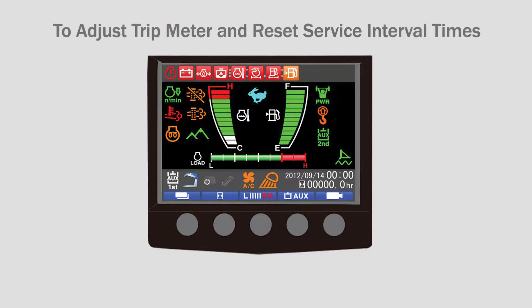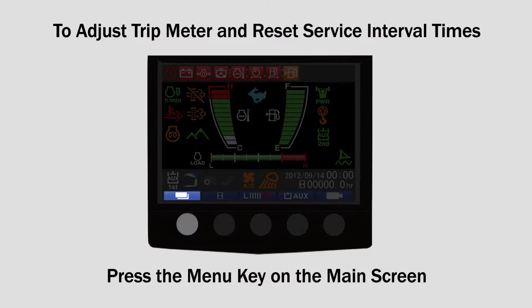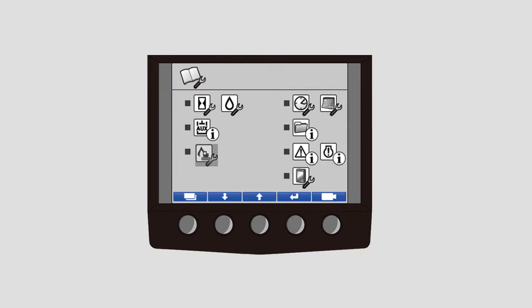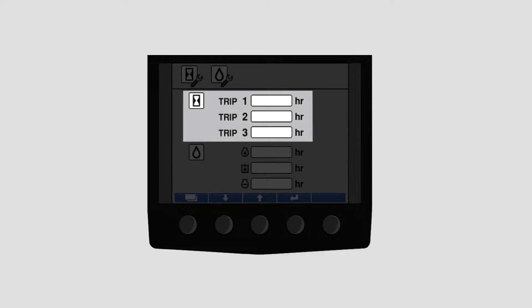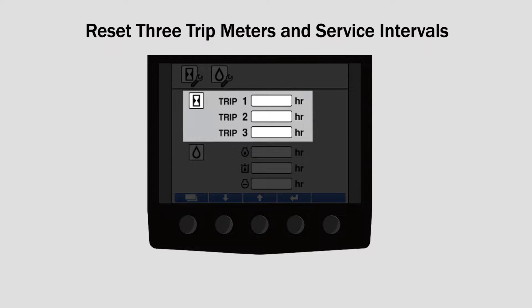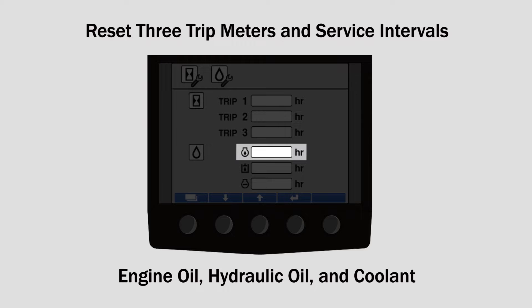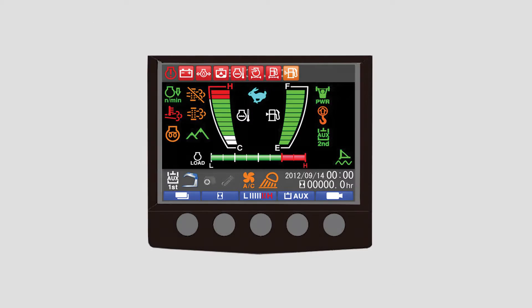In order to adjust the trip meter and reset the service interval times, start by pressing the menu key on the main screen. Select the first group of icons for the trip meter setting. From this screen, you can reset the three trip meters and the service intervals for the engine oil, hydraulic oil, and the coolant.